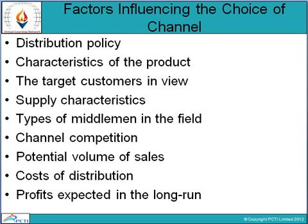Characteristics of the product also influence the choice of channel. Perishable products like eggs and milk with very short expiry dates are distributed through short channels. Characteristics of target customers also matter: if the number of customers is large and the geographical area is extensive, long and multiple channels are necessary for intensive distribution. If producers are small in number and concentrated in one region, short channels are generally used.